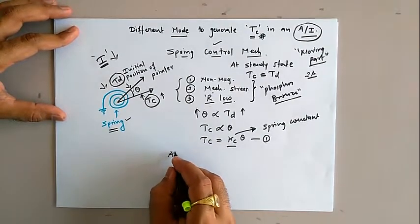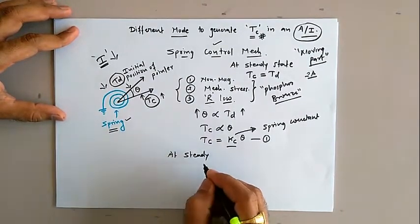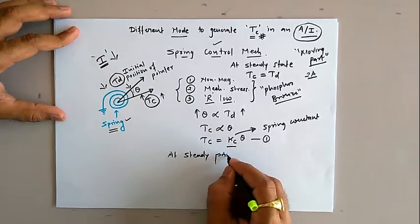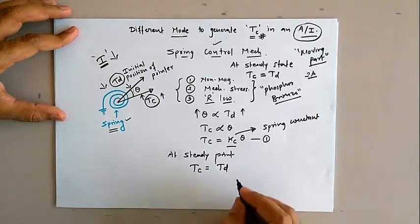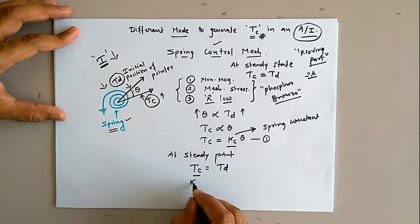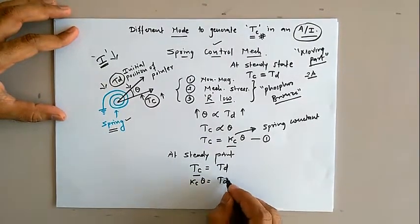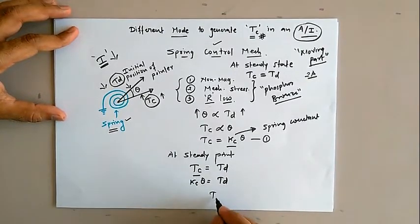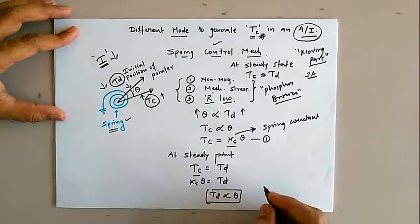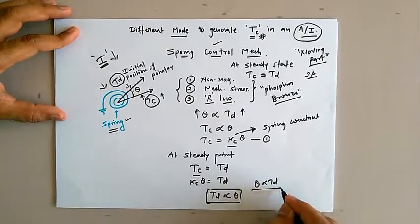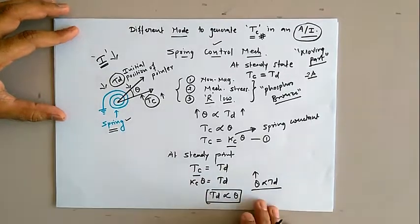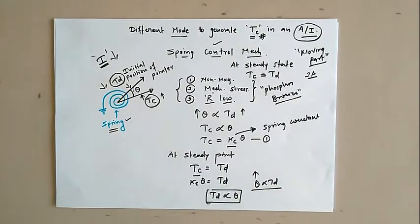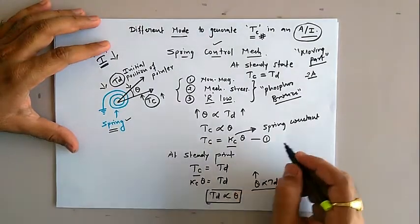At equilibrium or steady state condition, the controlling torque equals the deflection torque. So we can write Kc × θ = Td, which gives us Td proportional to θ, or equivalently θ is proportional to Td. This means as the magnitude of deflection torque increases, our output deflection angle also increases correspondingly.